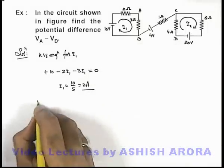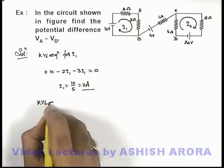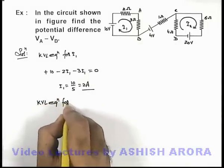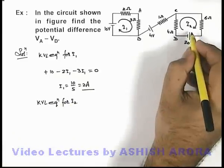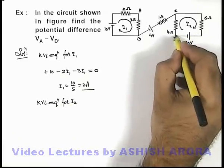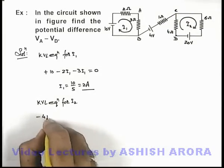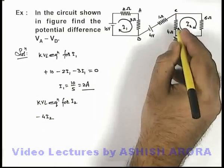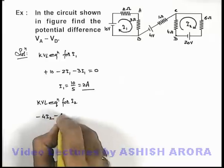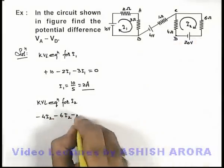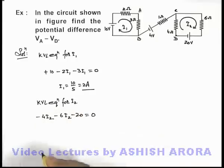Similarly for the second loop, we can write KVL equation. Here if we write KVL equation for i_2, we can start from any point, say we start from point D. Then along with the current we can write minus 4i_2, the potential drop across 4 ohm, then it is minus 6i_2, then it'll be minus 20 is equal to zero.